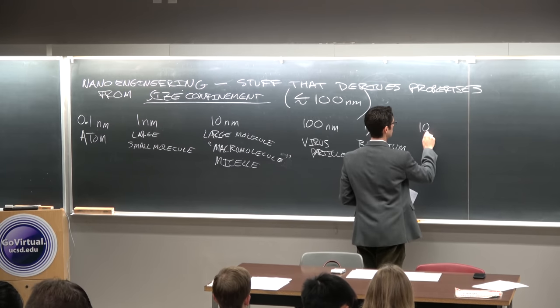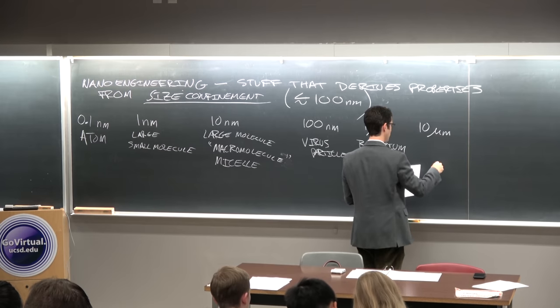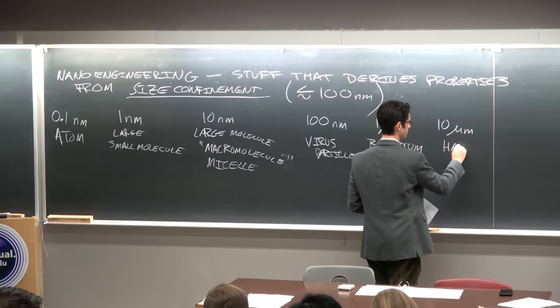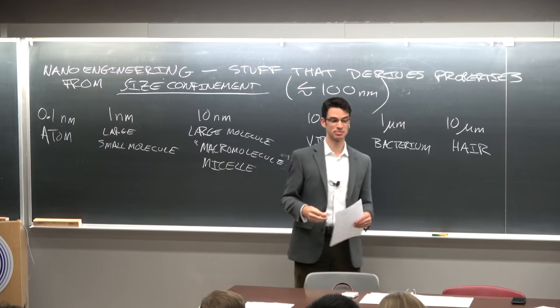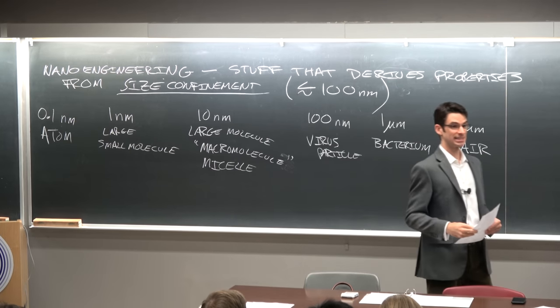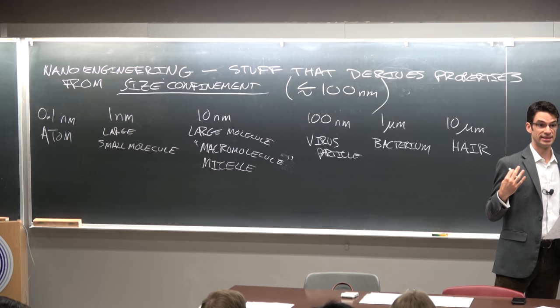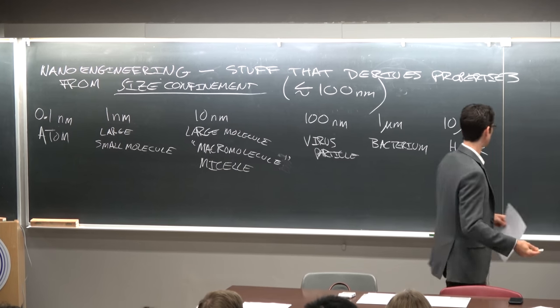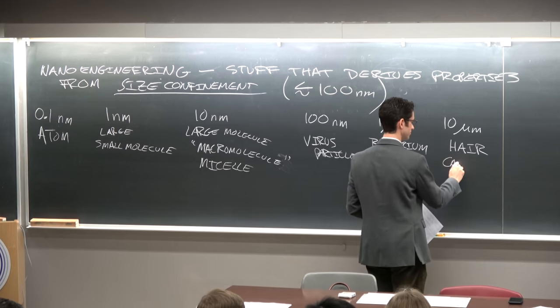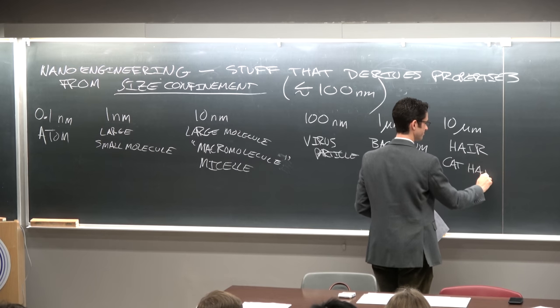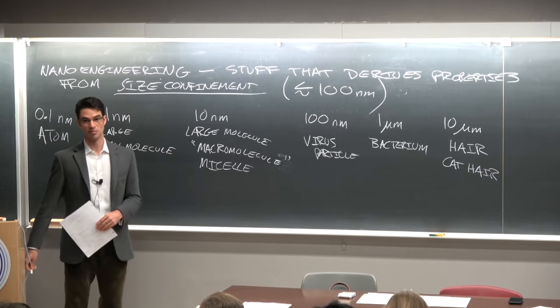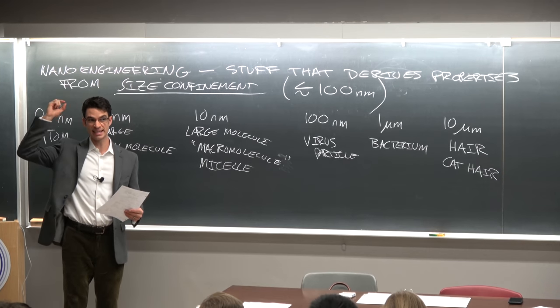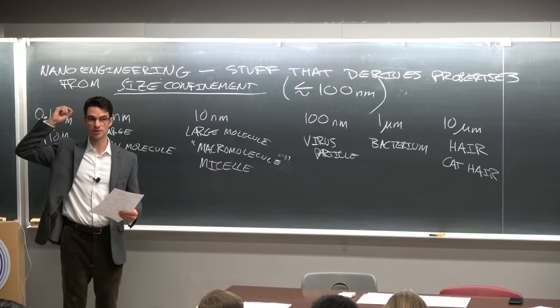10 microns would be like a hair, the diameter of a hair. 10 microns is an especially thin hair. So let's say this is a cat hair, probably 10 to 50 microns is more typical.